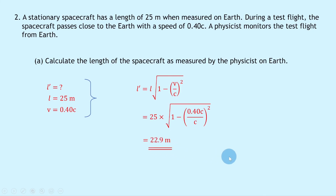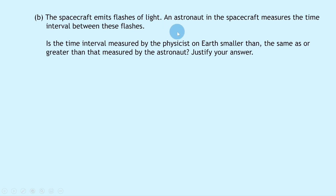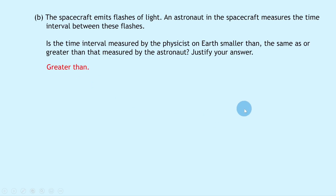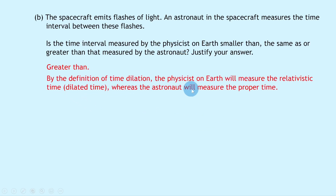Part B says the spacecraft emits flashes of light. An astronaut in the spacecraft measures the time interval between these flashes. Is the time interval measured by the physicist on Earth smaller than, the same as, or greater than that measured by the astronaut? The astronaut is in the spacecraft, so they measure the proper time t. The physicist on Earth will measure the relativistic or dilated time t'. Therefore, the physicist on Earth will measure a time interval greater than that observed by the astronaut.